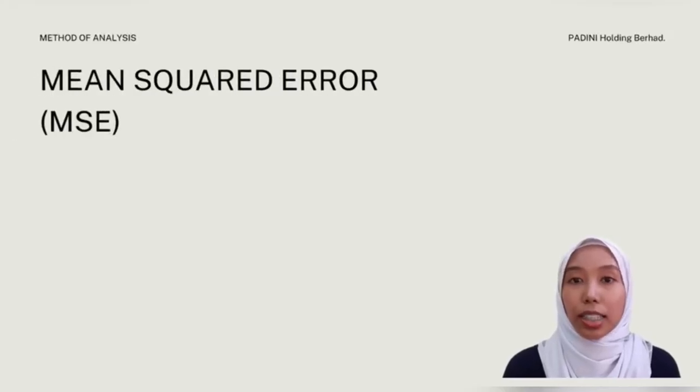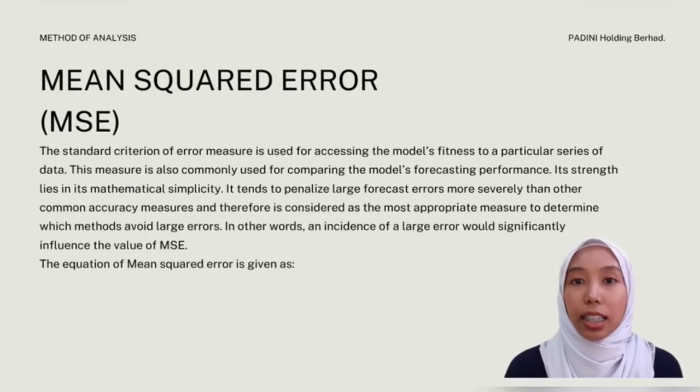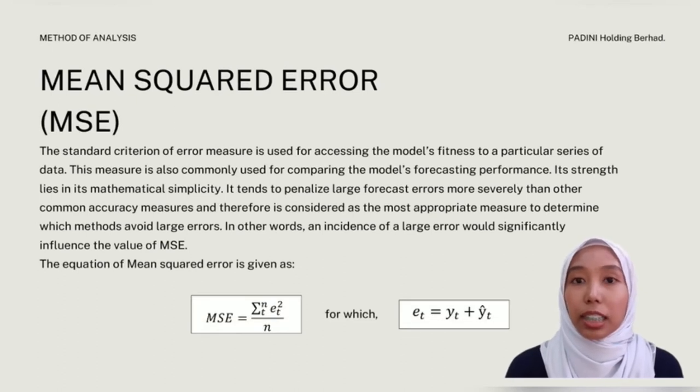Next, mean square error, also known as MSE. MSE is a standard criterion of error measure. It is used for assessing the model fitness to a particular series of data. It is considered as the most appropriate measure to determine which method avoids large errors. In other words, an incidence of a large error would significantly influence the value of MSE.